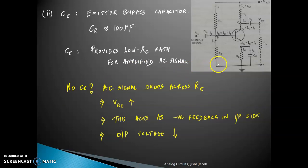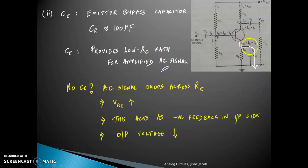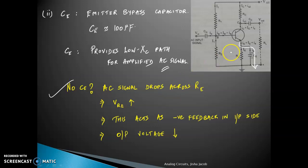Next is the emitter bypass capacitor C-E. Its purpose is to offer a low impedance path for the amplified AC signal, so that almost the entire AC signal bypasses the emitter resistance R-E. If there was no emitter bypass capacitor, the AC signal would drop across R-E, increasing the voltage across R-E.